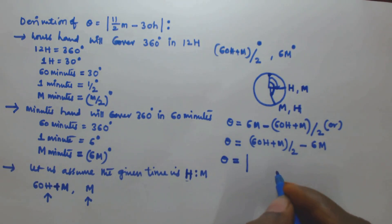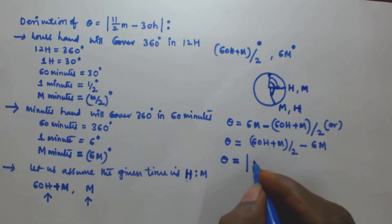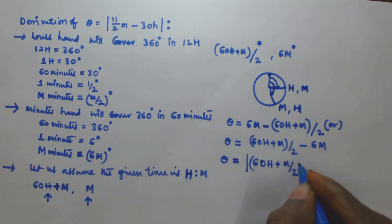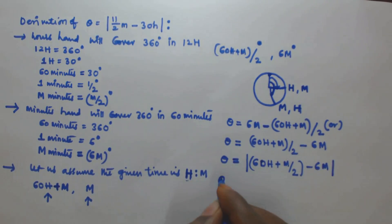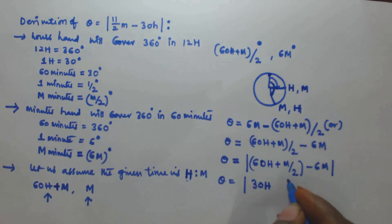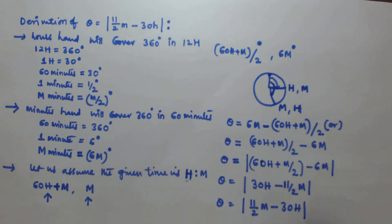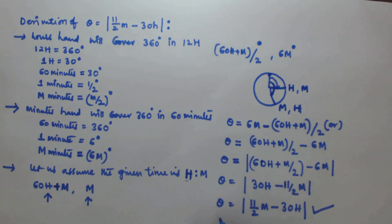With the modulus, |a − b| = |b − a|, so we take one expression: θ = |(60h + m)/2 − 6m|. Solving this gives θ = |30h − 11/2·m|, which is the same as θ = |11/2·m − 30h|. This is the formula that gives the angle difference between the two hands when the given time is h hours and m minutes. I hope everyone understood this. If you have any doubt, please leave a comment and subscribe to my channel.